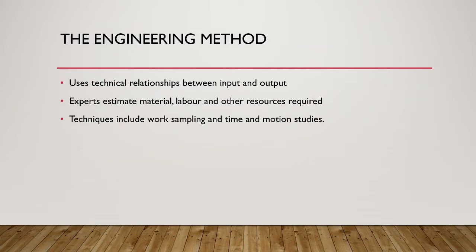Let us now consider our first method, the engineering method. This method uses the technical relationships between the input and output in order to estimate costs. In order to perform this method, experts who are familiar with the technical requirements and processes estimate the quantities of material, labor, and other resources required for the various operations using techniques such as work sampling or time and motion studies. They then apply the prices or rates of the resources to these quantity estimates to arrive at the estimated cost.